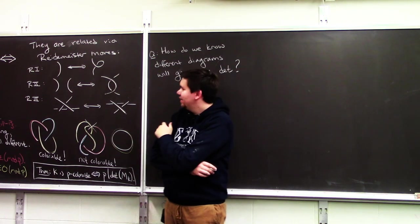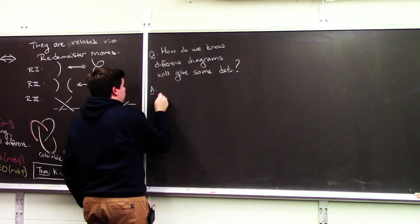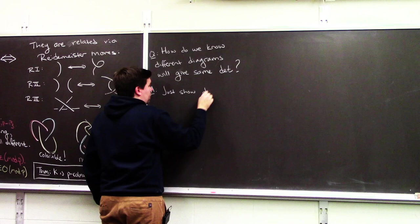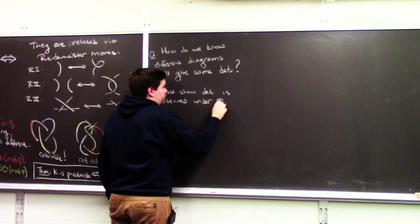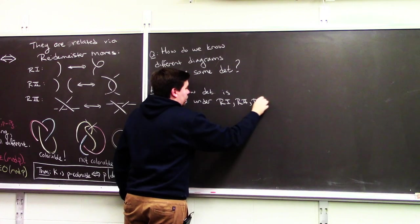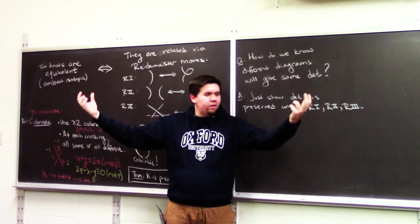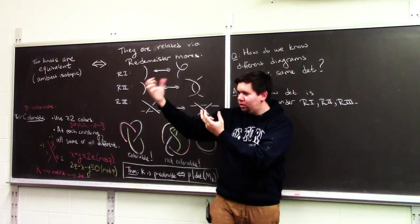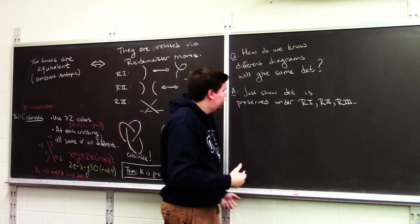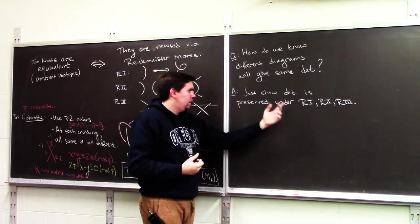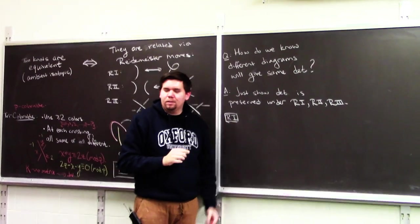If it has something to do with the Reidemeister moves — that's right. We just need to show that the determinant is preserved under Reidemeister moves: move one, move two, and move three. Because then if you have any two diagrams, you can move from one to the other via a series of Reidemeister moves. If we know at each step the determinant stays the same, then overall the determinants stay the same. Let's pick R1 and see why the determinant doesn't change under R1.